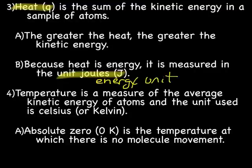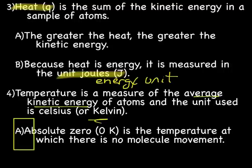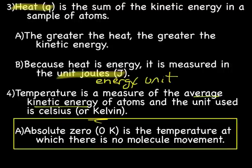Temperature is a measure of the average kinetic energy of atoms, and the unit used is Celsius or Kelvin. And this is an important one here. Absolute zero, meaning the theoretical lowest possible temperature, absolute zero is zero degrees K. And that's the temperature at which there is no molecule movement. Absolute zero is theoretical.